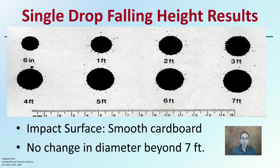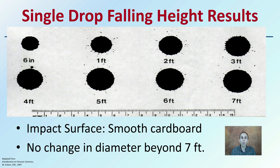Here is a single drop falling height results, giving comparison between 6 inches, 1 foot, 2 feet, 3 feet, and so on. The impact surface was smooth cardboard in this case. There is no change in diameter beyond 7 feet, so this is useful when we suspect the blood fell 7 feet or less — that can tell us vital information. If we think it's 7, 8, or 9 feet, it becomes very hard to prove beyond 7 feet or greater.